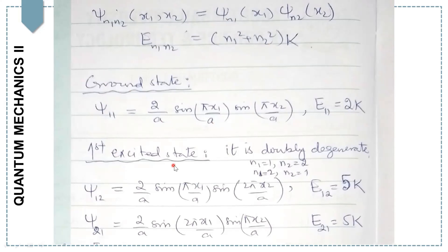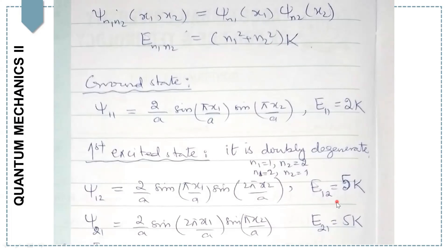The first excited state for distinguishable particles is doubly degenerate. Putting n₁=1, n₂=2 gives ψ_{12} and putting n₁=2, n₂=1 gives ψ_{21}. In both cases the energy is E = (1²+2²)K = 5K, so we get two degenerate states.